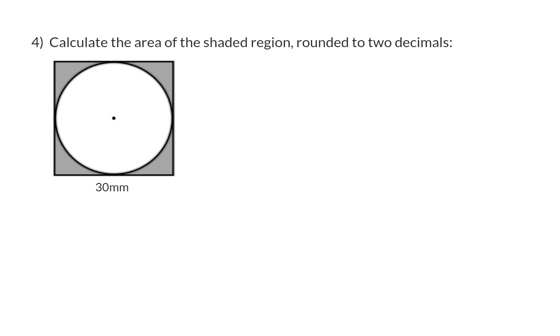This shape is formed by taking a square and cutting out a circle. The part that is left will form our shaded region. Therefore, to determine the area of the shaded region, we are going to start off with the area of a square, which is side squared, and then subtract from that the area of the circle.